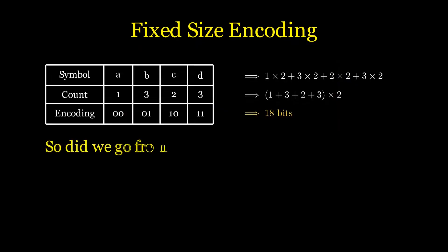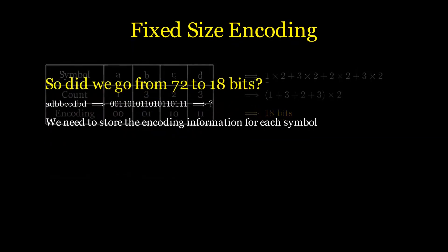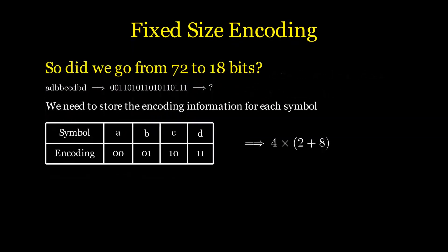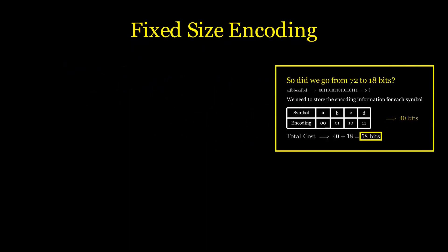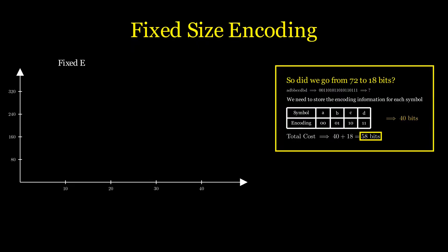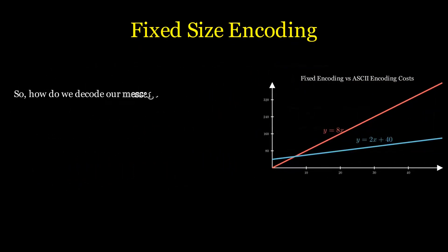So did we go from 72 to 18 bits? Not really. Although we can encode or decode our message in lesser space, other applications cannot — it's different from ASCII, which is a standard understood by all systems. Hence, we need to provide the symbol encoding table along with our message. This fixed information comes out as 40 bits, which along with our message cost is 58 bits. This is a decent improvement from 72 bits, and we can get even better reduction as the total character count increases. Finally, the decoding process is trivial: we just go over the string with an offset of k — 2 in our case — and use the symbol table to get the original message back.